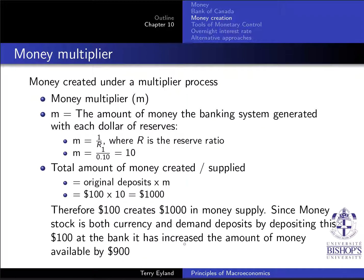By depositing this hundred dollars in the bank, the amount of money available has increased by nine hundred dollars. Make sure you know how to calculate the money multiplier using this equation, and how to find how much money is now available. If the hundred dollars was previously inaccessible — like in a vault — it led to an increase of a thousand dollars. But if it was already in circulation as currency at home, you've only created the excess nine hundred dollars. Read the question carefully to determine whether the answer is a thousand or nine hundred.